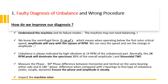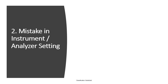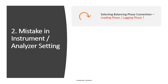The second mistake involves instrument or analyzer settings. First, selecting the wrong balancing phase convention — each analyzer has a setting for whether phase is leading or lagging, which determines weight location with respect to the direction of rotation. Most analyzers default to lagging phase, which gives a positive phase angle where angles increase in the opposite direction to rotation.